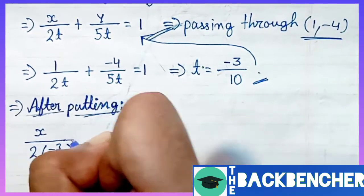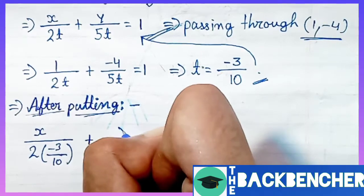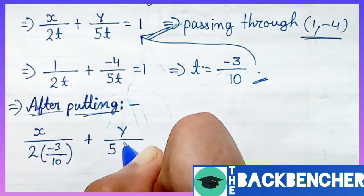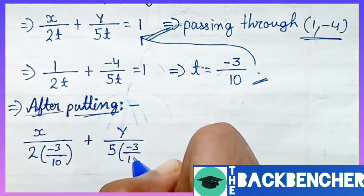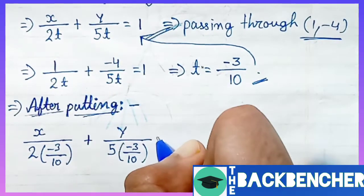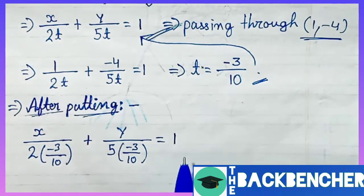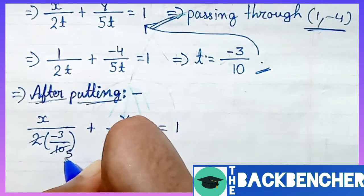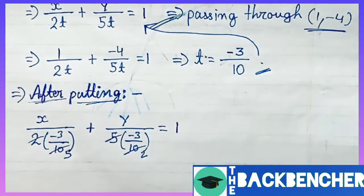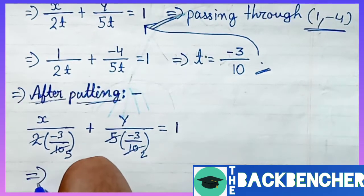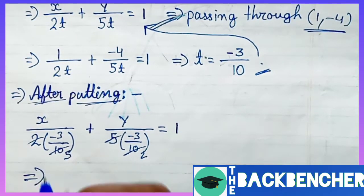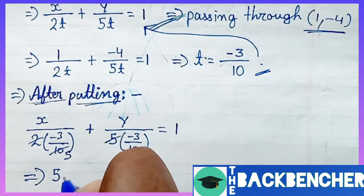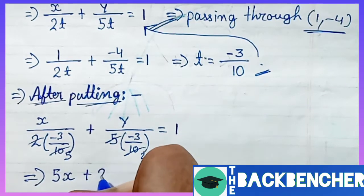After putting the value of t = -3/10 in the above equation x/(2t) + y/(5t) = 1, we will put this value into the equation. We'll get x/(2(-3/10)) + y/(5(-3/10)) = 1. We have just put in the value of t and now after simplifying we will get the equation of line.